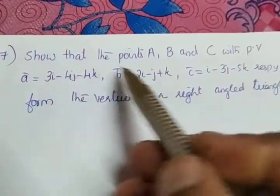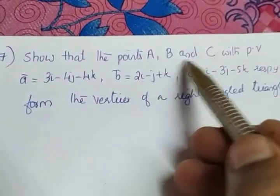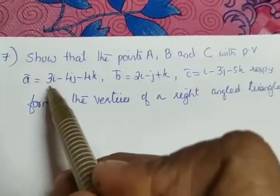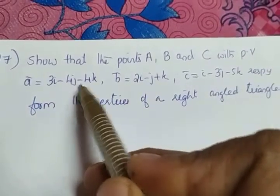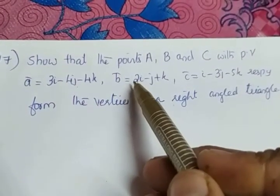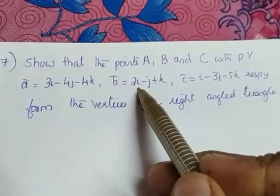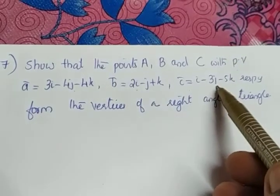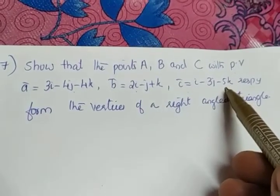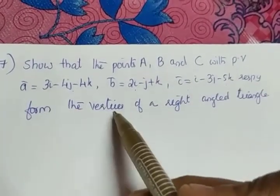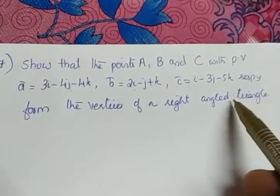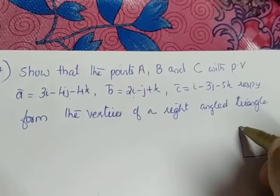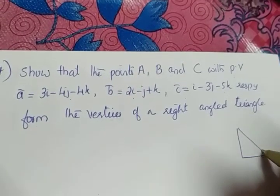Show that the points A, B, C with position vectors: A is equal to 3i minus 4j minus 4k, B is equal to 2i minus j plus k, and C is equal to i minus 3j minus 5k respectively form the vertices of a right-angled triangle. Right-angled triangle means one angle will be 90 degrees.